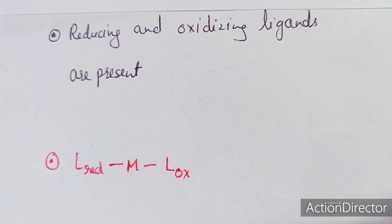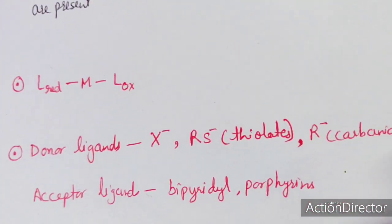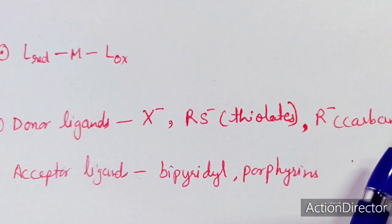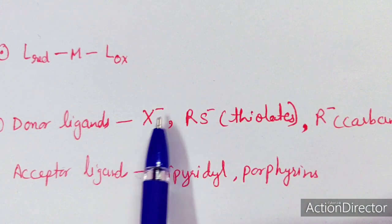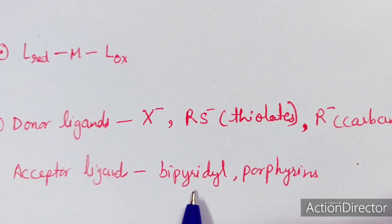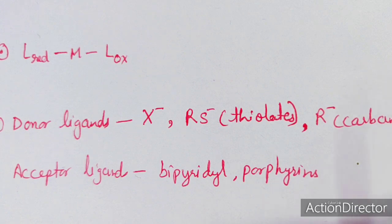There should be one donor ligand and one acceptor ligand in the same complex. Donor ligands can be X⁻ species such as halides, thiolates, or carbonyls — they have sufficient electrons and carry negative charge. Acceptor ligands are pi-conjugated system ligands, like bipyridyl or porphyridyl rings, which act as the acceptor ligands.